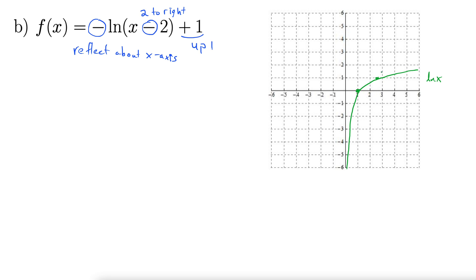but now instead of going through this point here, which is (e,1), it's going to go through (e,-1). And so it'll come along the y-axis like this now and go through like that. So now we have negative natural log x.